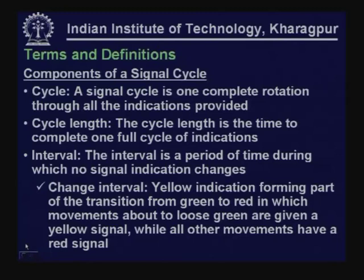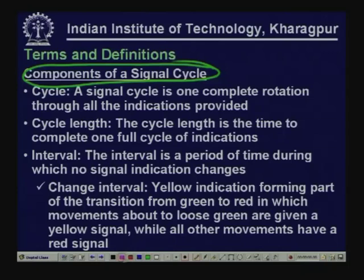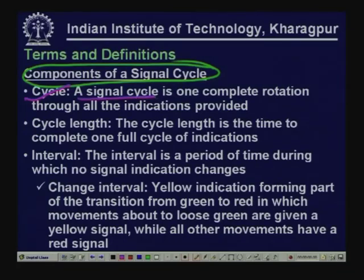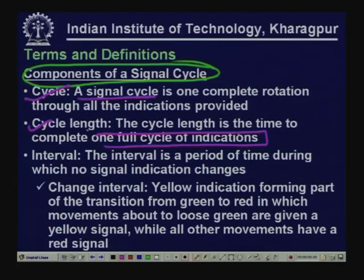First, components related to a signal cycle. A signal cycle is one complete rotation through all the indications provided. A cycle length is the time to complete one full cycle of indications. When approaching an intersection, you may get red, amber, or green - one complete rotation through all these indications is a signal cycle.